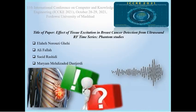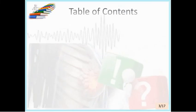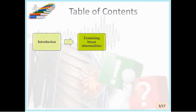The title of this paper is 'Effect of Tissue Excitation in Breast Cancer Detection from Ultrasound RF Time Series.' It is a phantom study. The slides follow the paper structure and explain a new idea in tissue characterization. The sections include introduction, examination, breast abnormalities, and motivation, which explain the reasoning behind the new idea.